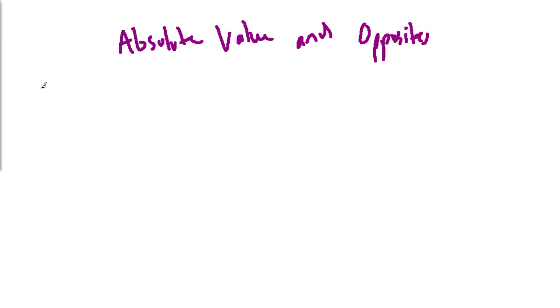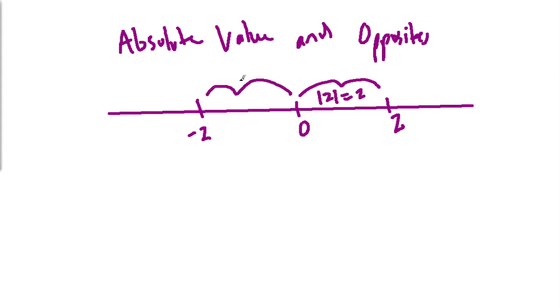Now, opposites are two numbers that are an equal distance from 0 on the number line. So, we're talking about a lot of distance here in this video. So, let's say we have 2 and negative 2. The absolute value of 2 is 2 because going from 0 to 2 is 2 units.